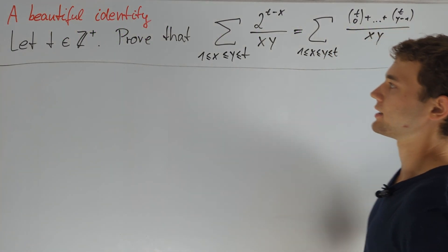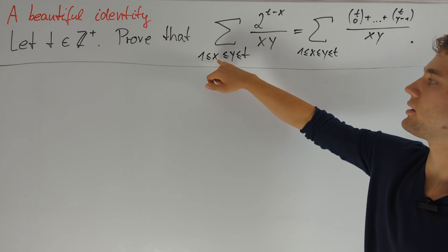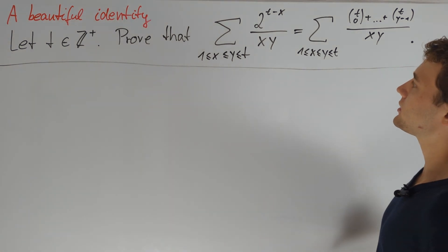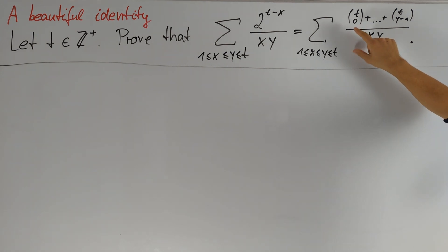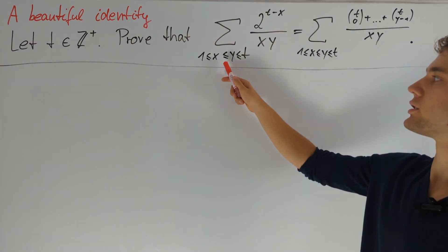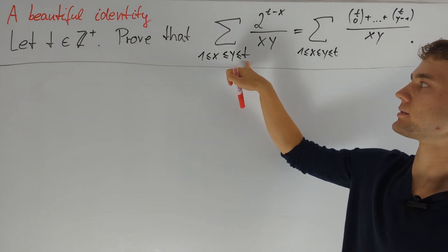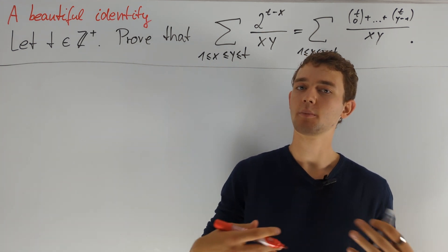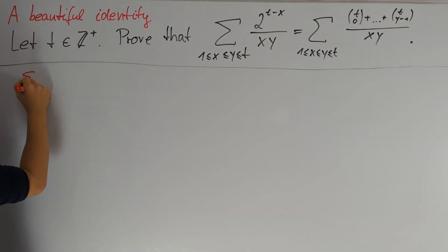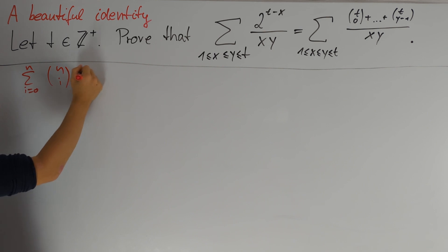In this video, we will solve a beautiful identity. For t greater than 0, we are asked to prove that the sum over 1 ≤ x ≤ y ≤ t of 2^(t−x) divided by xy equals the same sum of (t choose 0) plus ... plus (t choose y−1) divided by xy. This notation refers to summing over all pairs x, y satisfying these inequalities. We will use the fact that the sum over i from 0 to n of (n choose i) equals (1+1)^n = 2^n.